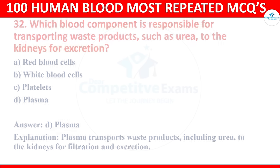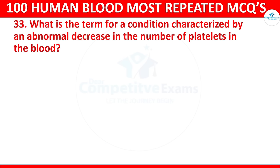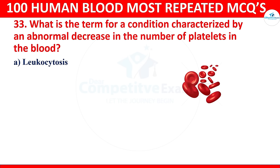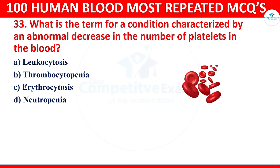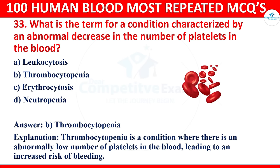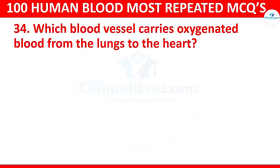Question 33: What is the term for the condition characterized by an abnormal decrease in the number of platelets in the blood? Options: leukocytosis, thrombocytopenia, erythrocytosis, or neutropenia. The correct answer is thrombocytopenia. Thrombocytopenia is a condition where there is an abnormally low number of platelets in the blood, leading to an increased risk of bleeding.